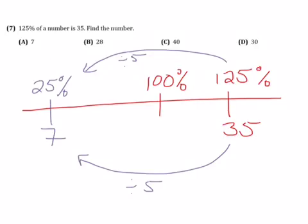Now, we know 25%. So, to get up to 100%, we multiply by 4. So, if we multiply 7 by 4, that will give us the original number.